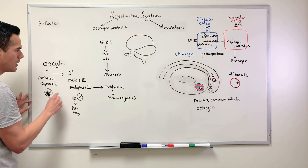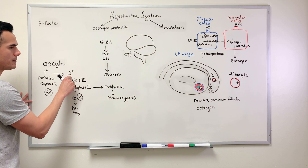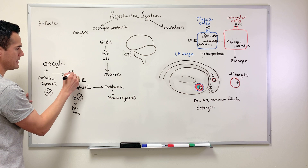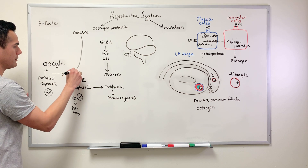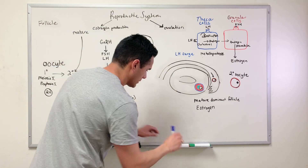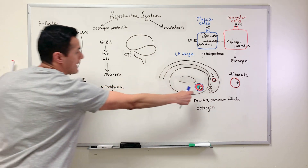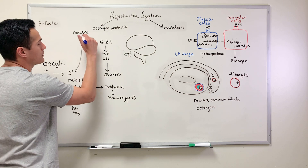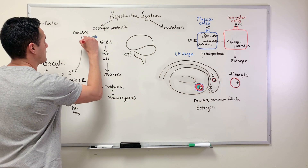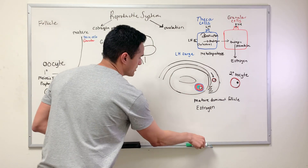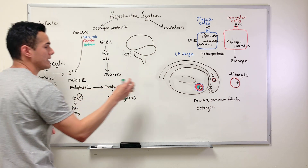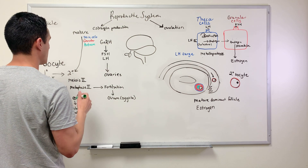The secondary oocyte is only found within the mature follicle. The mature follicle has defining features: it contains a layer of theca cells, granular cells, and a fluid-filled region drawn here in green known as the antrum, which also helps to develop the oocyte.